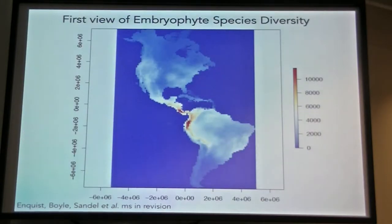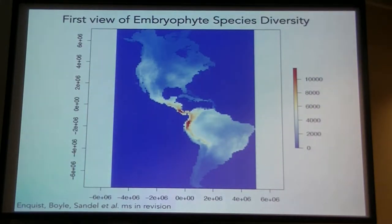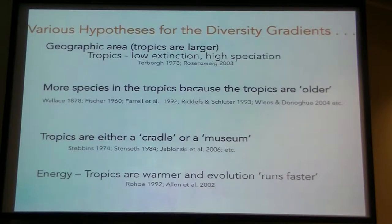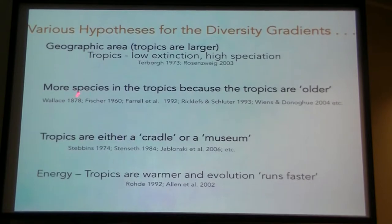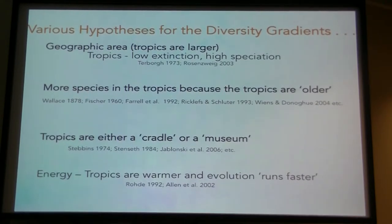We wanted to return to our map of species diversity and ask: can we approach several different hypotheses for variation in diversity by taking the approach of looking at phylogenetic diversity as well? In general, we have expectations that the tropics differ in terms of number of species — maybe because of the total geographic area of the tropics being larger, therefore we expect lower extinction and maybe higher speciation rates. Maybe there are more species in the tropics because the tropics are older, which means more time for both radiation and the accumulation of species.